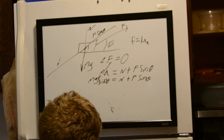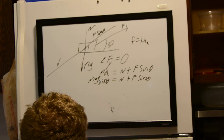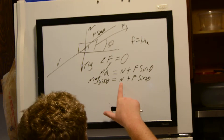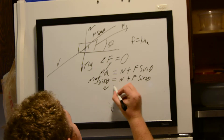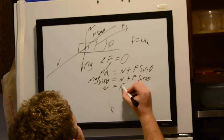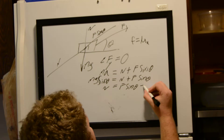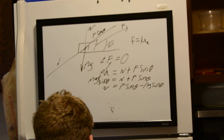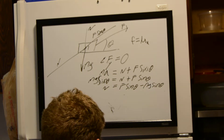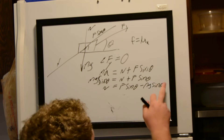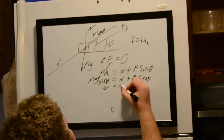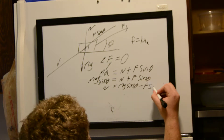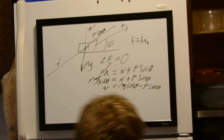Now we want to get our N value alone, because we'll plug that into an equation later. So N is equal to mass times gravity times sine theta minus F times sine theta.